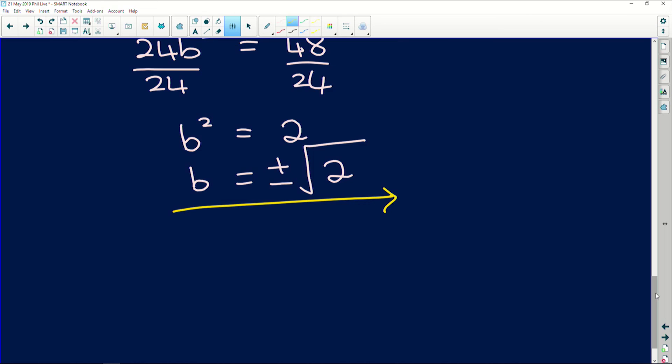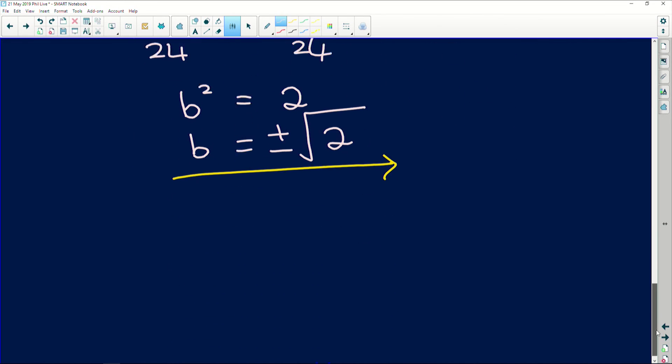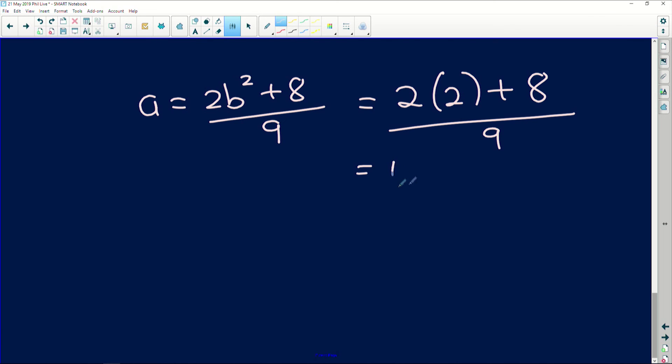Okay, so that's b solved for. Now we simply have to substitute b into one of our a equations. I'm going to choose this one because it seems a little less daunting. So we have 2b squared plus 8 over 9, plus 8 all over 9, which means that a is equal to 2 multiplied by, if you square a square root, you just get the number, plus 8 all over 9. And that gives us 4 plus 8 all over 9, which is 12 over 9. And some teachers prefer it in their simplest form. So try to simplify your fractions. And that is a.